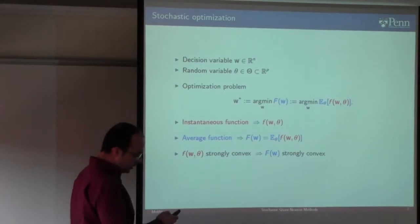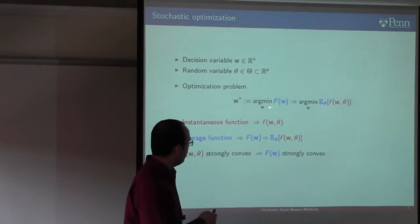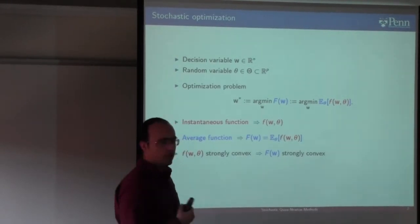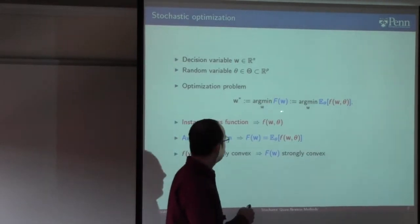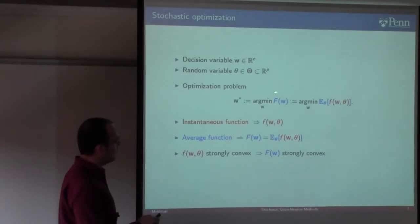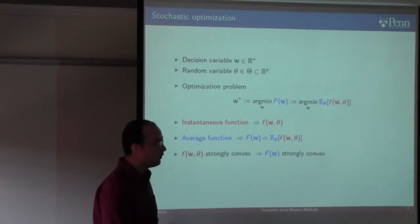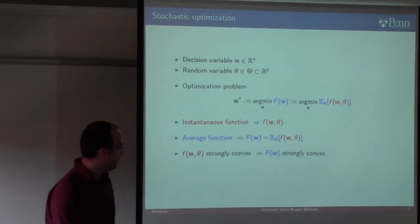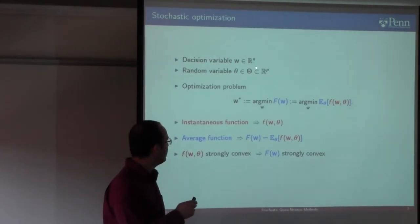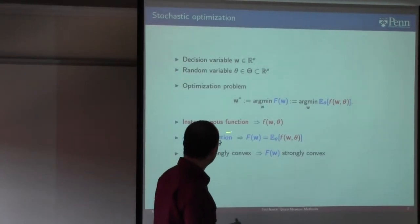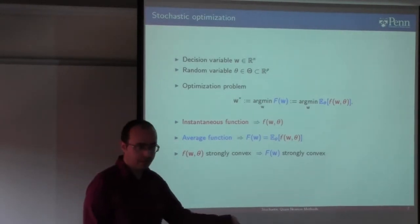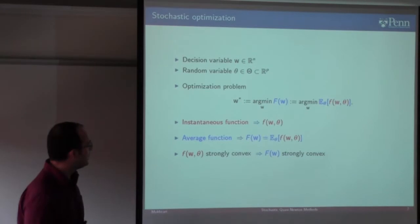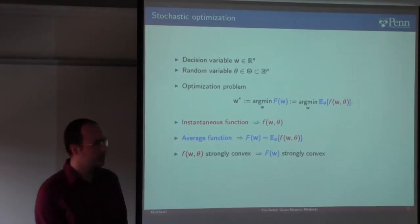So, what is the stochastic optimization problem? Like any other optimization problem, we want to minimize the objective function f — I'm going to call this the average function — where w is our optimization variable. The important thing about f is that you can write it as the expected value of a set of random functions. We call f in red an instantaneous function with two inputs: the optimization variable w and theta, a random variable chosen from a set capital theta. We want to minimize the expectation of these instantaneous functions, which we call the average function f. We assume the instantaneous functions are strongly convex, which implies the average function is also strongly convex.